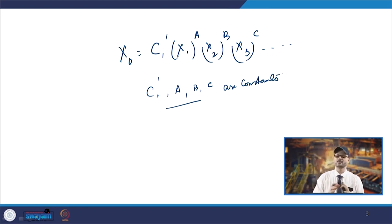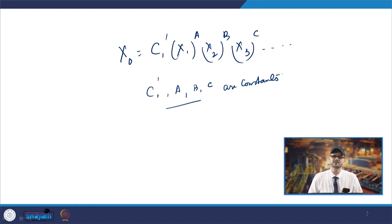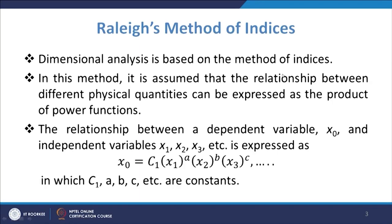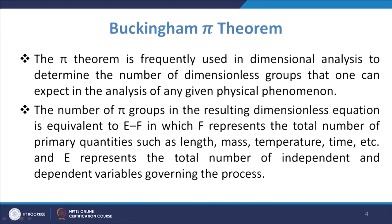These will be further equated on both sides and you can evaluate the constants, seeing how they can be expressed. Another method also used is the Buckingham Pi theorem, which is normally used in dimensional analysis to determine the number of dimensionless groups expected in the analysis of any given physical phenomenon.